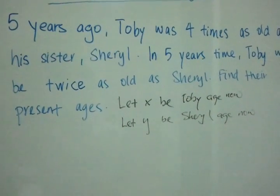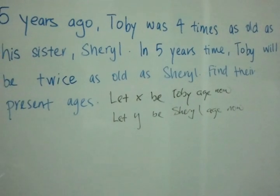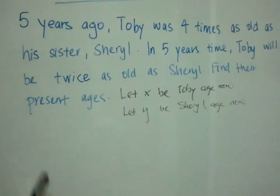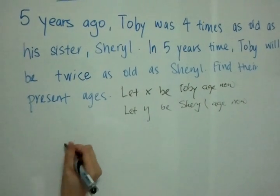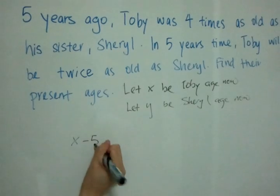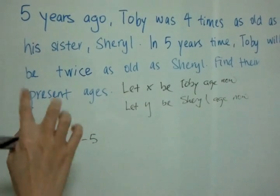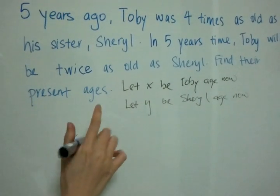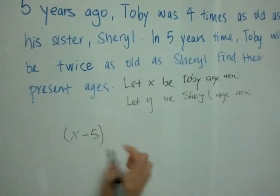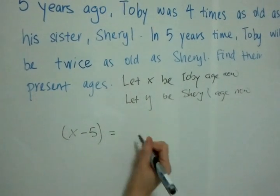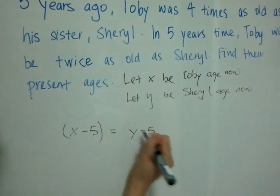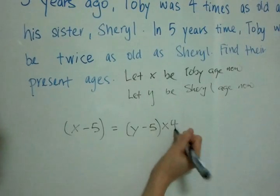Okay, so let's form the first equation. That is five years ago. So five years ago, Toby is X minus five, and he is actually four times as old as his sister. That means his sister's age, Y minus five, times four equals his age.